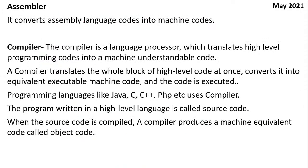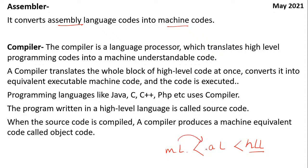What is an assembler? It converts assembly language into machine language. When studying computer generations, the first generation understood only machine language; the second generation understood assembly language, which was a little better than zeros and ones but not as simple as high-level language. The most difficult was machine language, then assembly language, and now software engineers use high-level language. To convert from assembly language to machine language, we use an assembler.